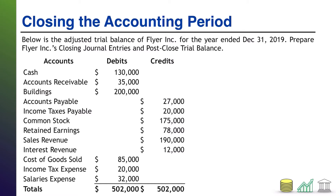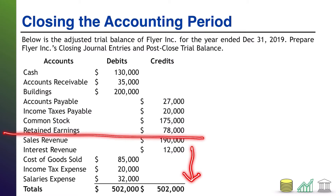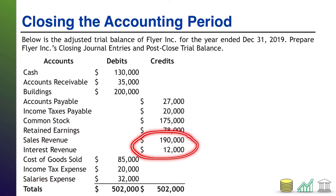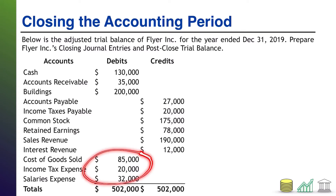Alright, here we go. First up, we need to prepare the closing entries. I'm going to start with the direct-to-retained earnings method. Looking at the adjusted trial balance, up top we have some assets, then liabilities, then shareholders' equity — those are the permanent accounts that do not close. The ones that close are your revenues and expenses — those are the temporary accounts. To close an account, you simply do the opposite of whatever its balance is.